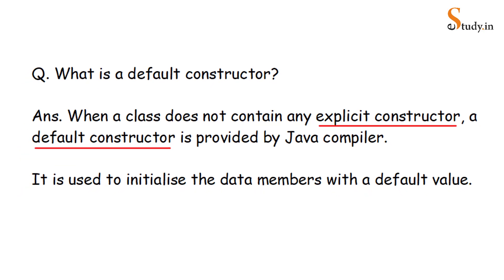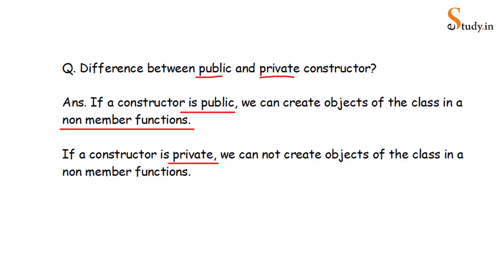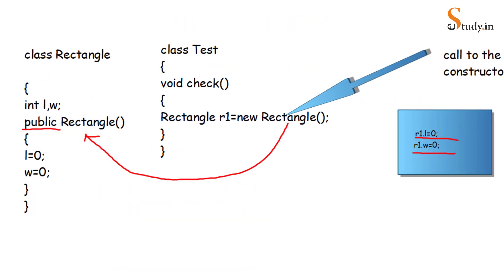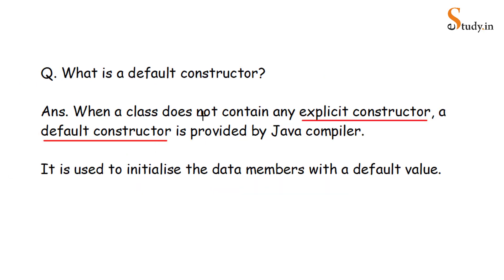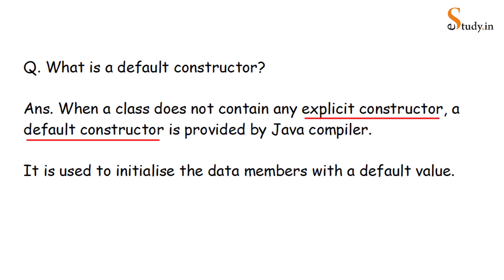Had we not created these constructors — if we go back and remove the constructor from the class — and still create an instance of the class, you might wonder which constructor would be called. In that case, a default constructor would be called, which is provided to us by the Java compiler. So a default constructor is provided by Java compiler when a class does not have an explicit constructor.